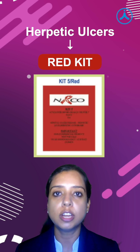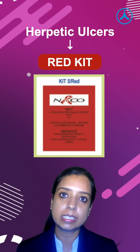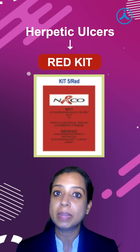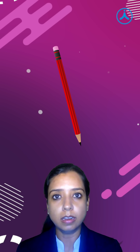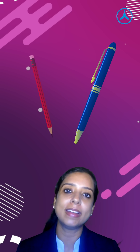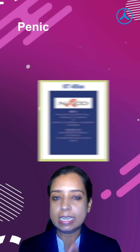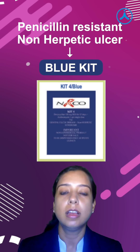The ulcers which are penicillin resistant — those who don't like penicillin, we tend to give them blue pen. So, penicillin resistant: blue kit.